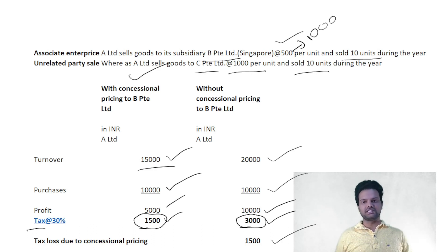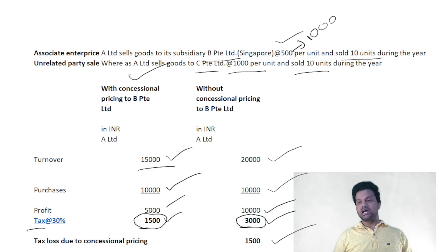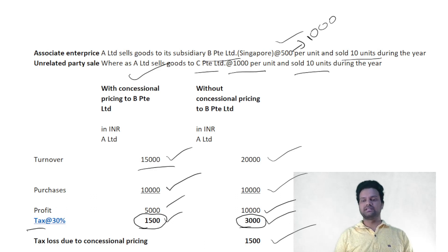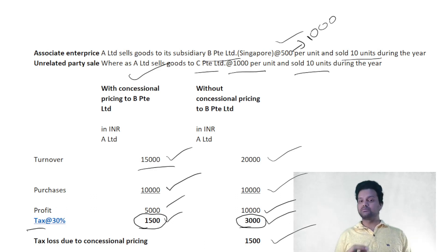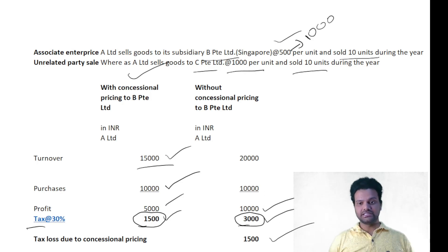Imagine across the country in a day, how many such international transactions would happen and how much tax would be foregone by the central government. That's the reason why these transfer pricing provisions were brought in through the Finance Act. In summary, there are three conditions that must be satisfied to make these provisions applicable.